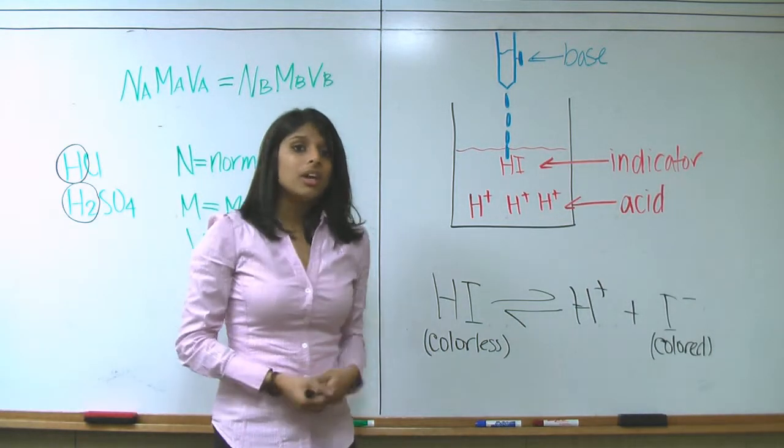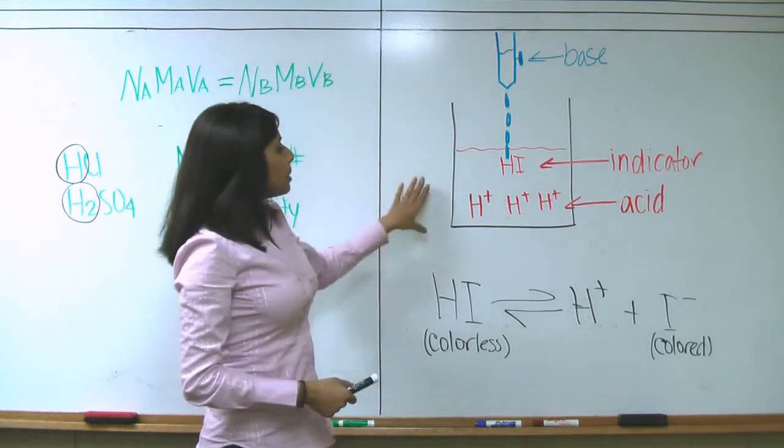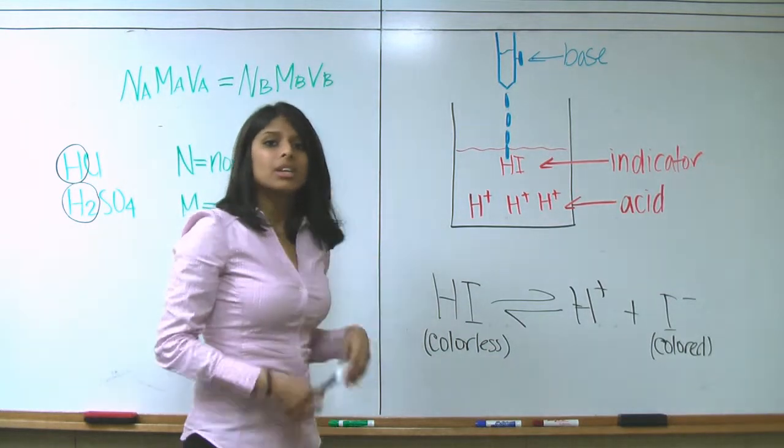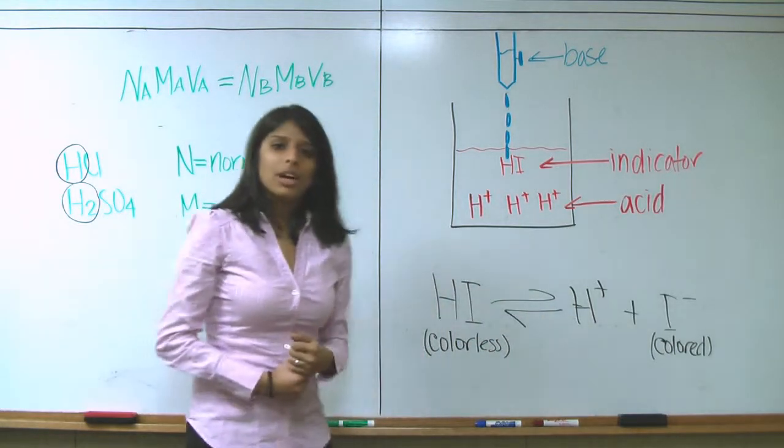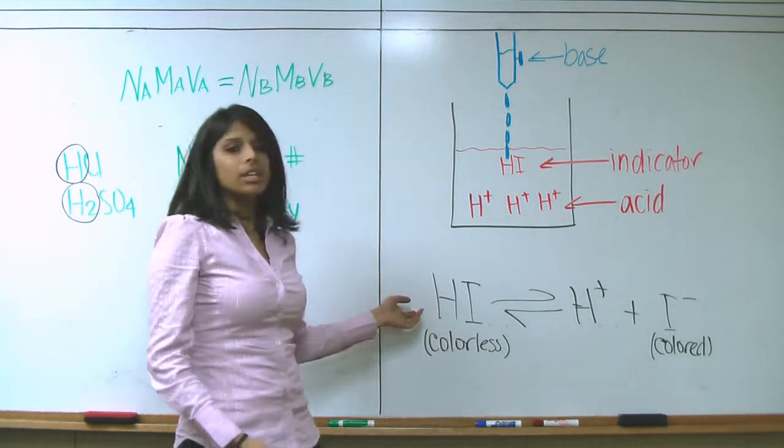This is because, since we're in an acidic solution here, there are lots and lots of protons flying around. So, the I- quickly binds to one of the protons and goes back to its original state as HI.